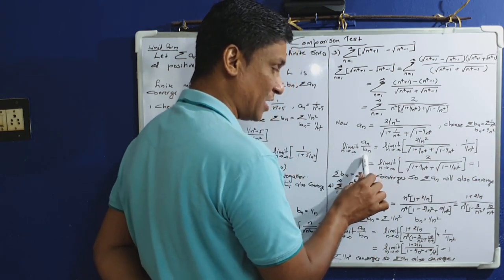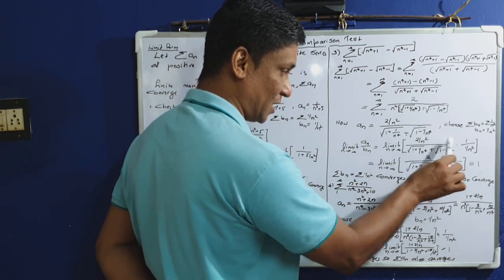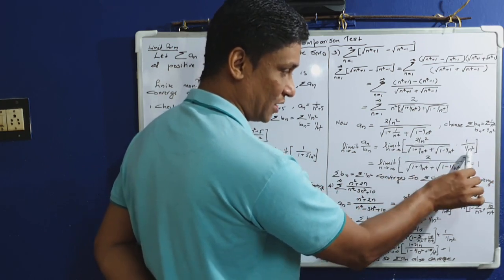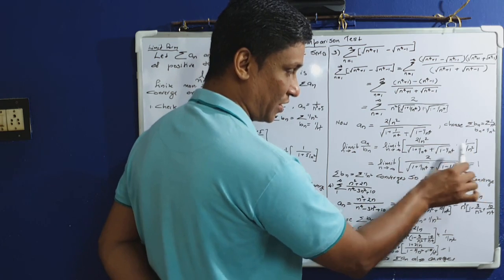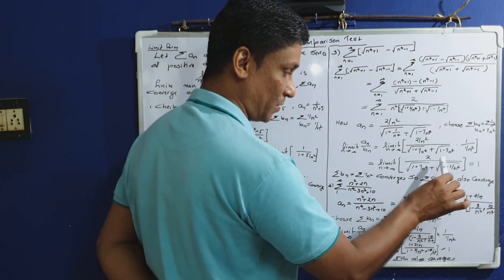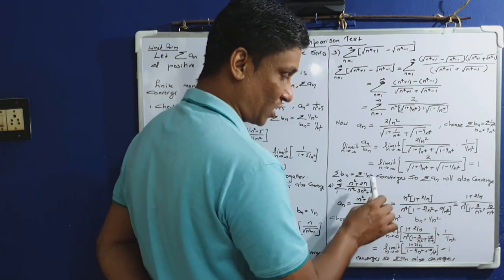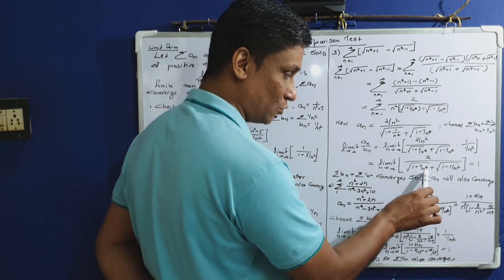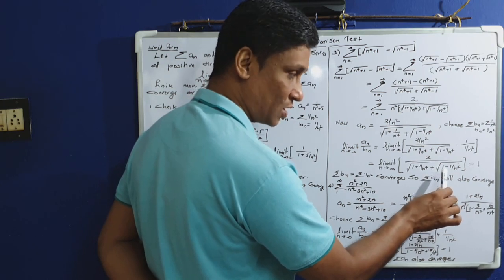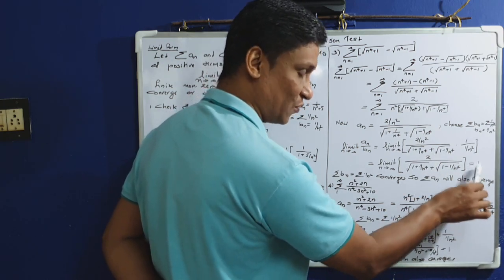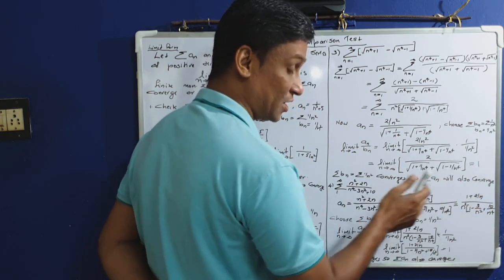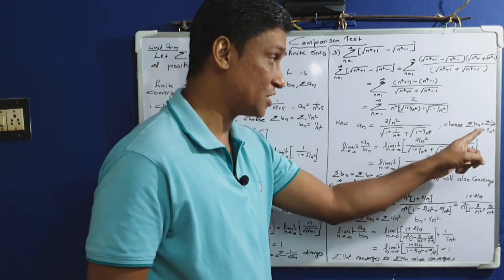With b_n = 1/n², limit n tends to infinity of a_n by b_n: since a_n has 1/n² and b_n has 1/n², the 1/n² terms cancel, leaving limit n tends to infinity of 2 divided by [√(1 + 1/n⁴) + √(1 − 1/n⁴)]. As n tends to infinity, 1/n⁴ tends to 0, giving 2 divided by (√1 + √1) = 2/2 = 1.